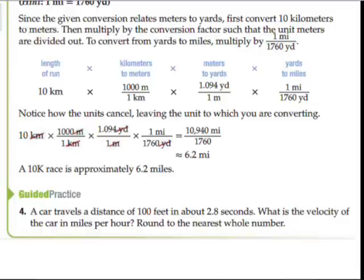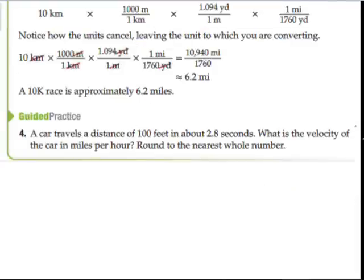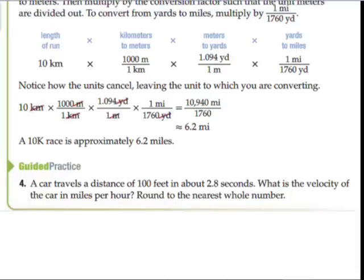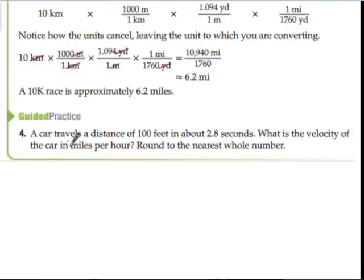So a car travels a distance. That may be tough to follow when it looks like that, by the way. But I promise you, you can do this stuff. A car travels a distance of 100 feet in about 2.8 seconds. What is the velocity of the car in miles per hour? Round to the nearest whole number. Go ahead and pause the video here. See if you can figure out how to find out the rate of the car in miles per hour if you know that it's 100 feet in about 2.8 seconds. Pause the video. Try that out on your own.